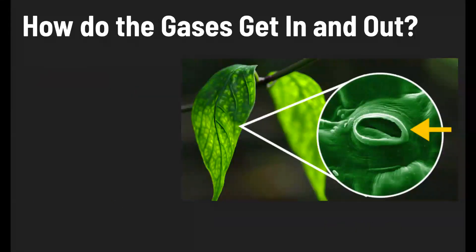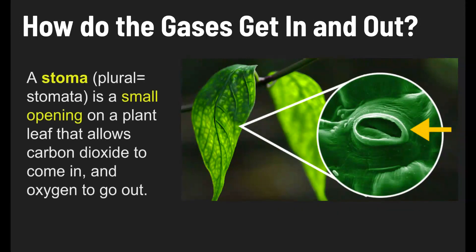Now, I mentioned that gases go in and out. Carbon dioxide goes in and oxygen goes out. So how do they get in and out of the plant? There's a part of the plant called a stoma, and it's a small opening on a plant's leaf that allows carbon dioxide to come in and oxygen to go out.